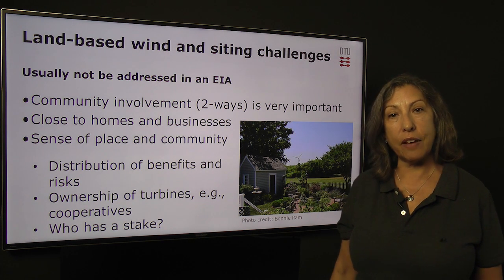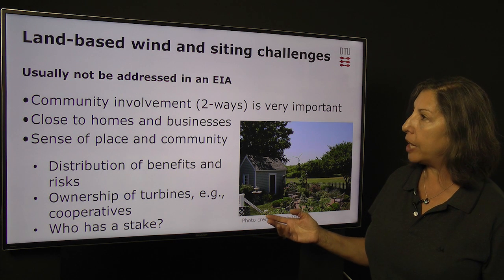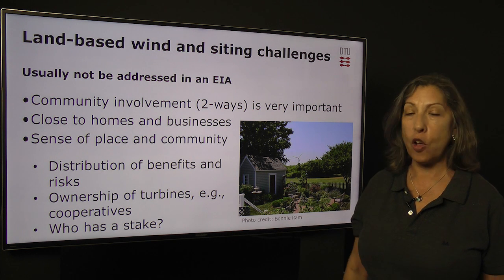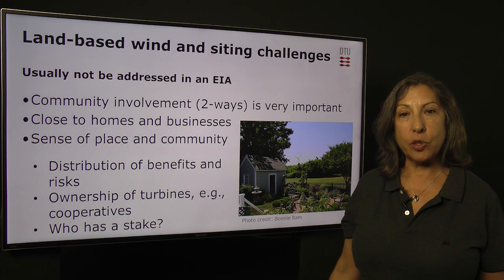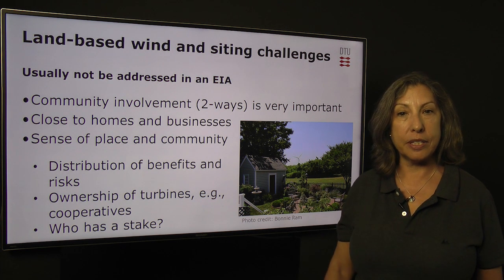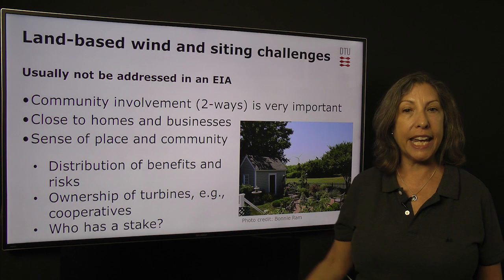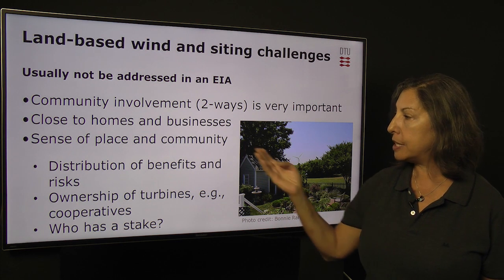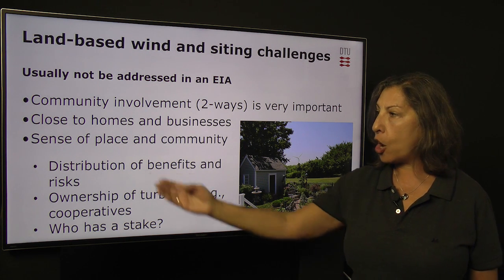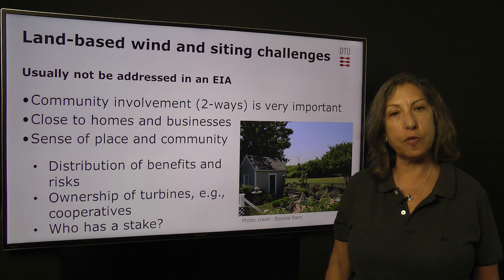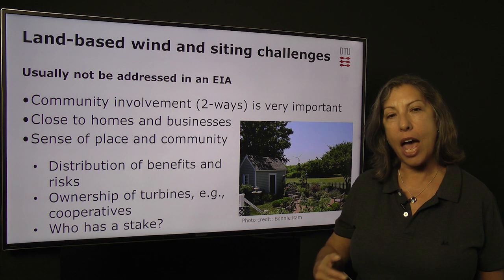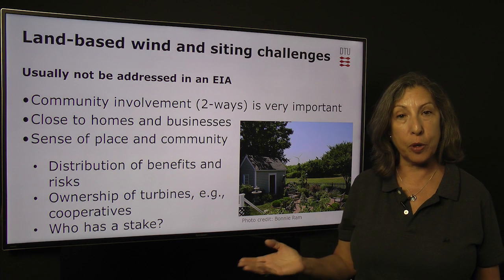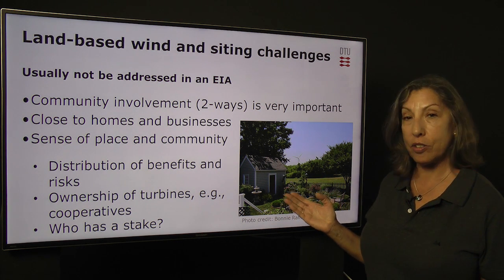Land-based wind and siting challenges have different sets of issues — some overlap with offshore, and some do not. These are usually not addressed in an EIA. For example, community involvement is very important for land-based wind because people live close to wind turbines in some cases, and there needs to be two-way engagement, not just one-way public hearings. Every community has a different sense of place — how long they've lived there, and how even just one turbine being installed could change their environment significantly.